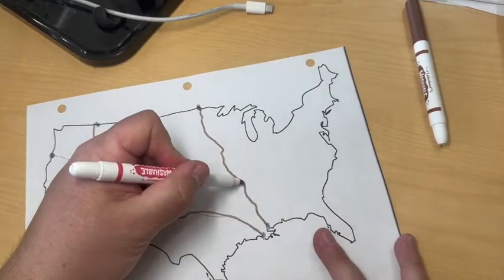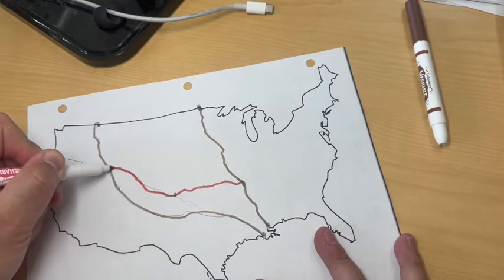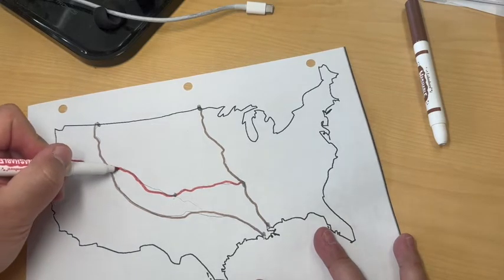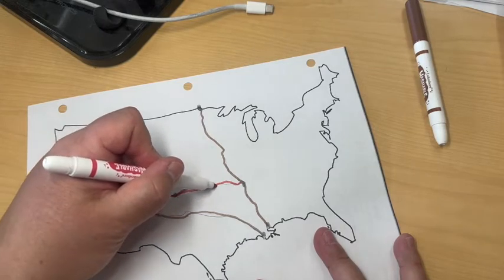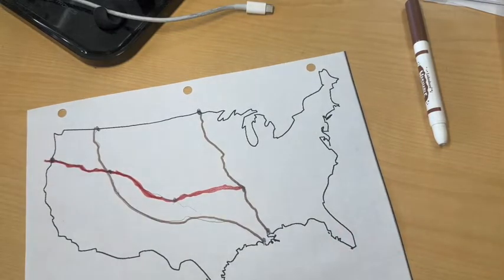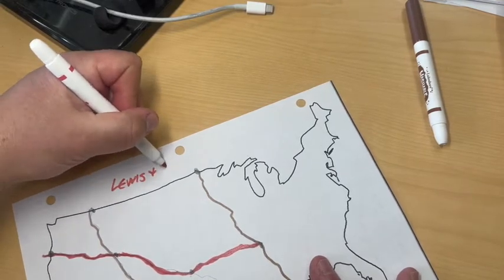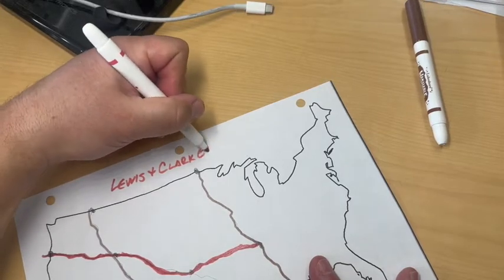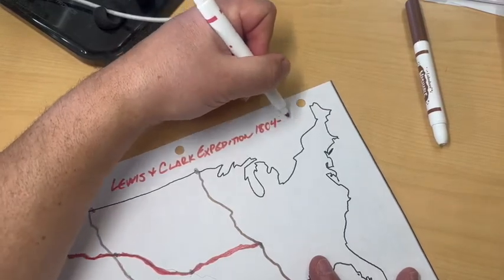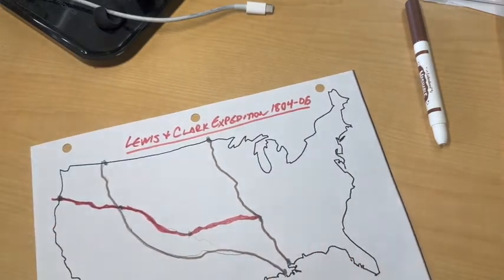The brown area represents the Louisiana Territory. This other path is the route Lewis and Clark and their Corps of Discovery took for the expedition — I'll color that in a different color, all the way to the Pacific Ocean. Nice and thick so it's obvious. Now I've got my path. I'll put the title here: Lewis and Clark Expedition, 1804–1806, and underline it.